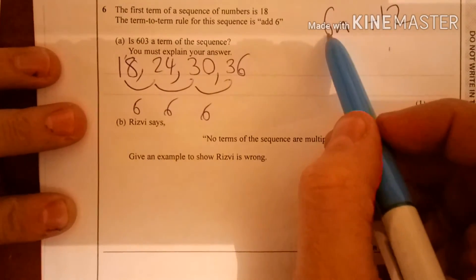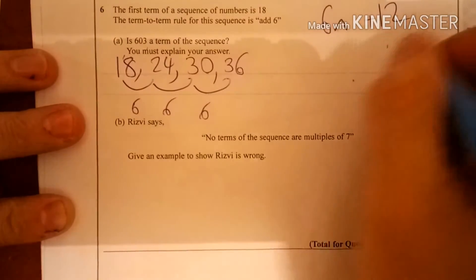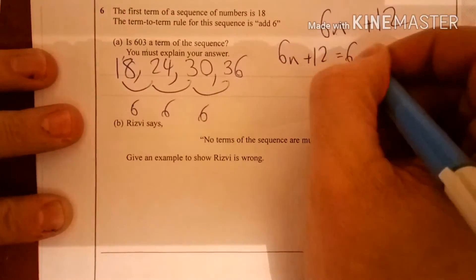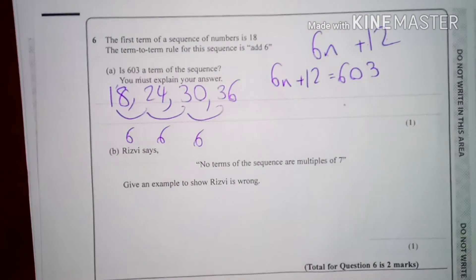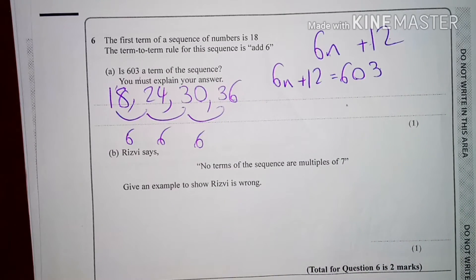Now, it's actually asking us, if I do 6 times a number, add 12, will I get to 603? So I'm doing 6n plus 12 equals 603. Right, 6n plus 12 equals 603. We'll have a solution. If n's a whole number, then we can prove that it's going to be in the sequence.